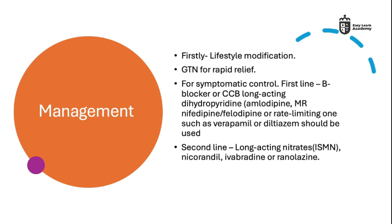For symptomatic control, there are two first-line treatments — it's either a beta blocker or a calcium channel blocker, which can be the long-acting dihydropyridine type or the rate-limiting ones. While on a beta blocker, you have to maximise the dose before adding a calcium channel blocker if symptoms are not completely resolved.